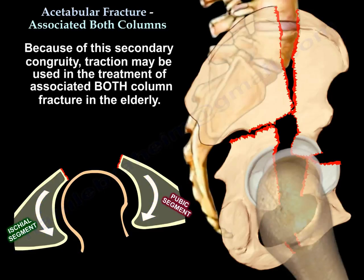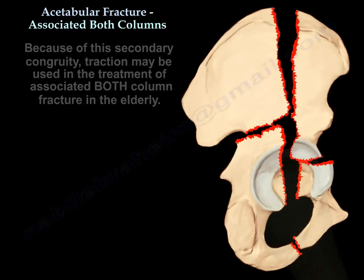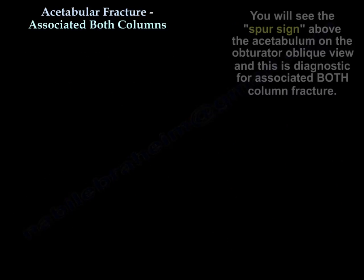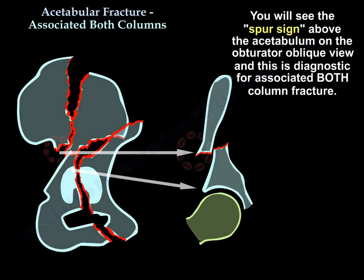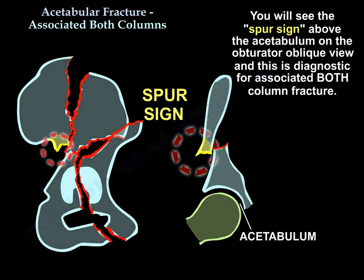Because of this secondary congruity, traction may be used in the treatment of associated both column fractures in the elderly. You are going to see the spur sign above the acetabulum on the obturator oblique view, and that is diagnostic for associated both column fracture.